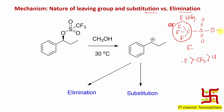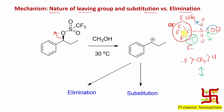Trifluoromethane sulfuric acid is stronger than sulfuric acid — it is a super acid. This leaving group leaves and results in a carbocation. A group is considered a good leaving group if the negative charge on it is well stabilized. The negative charge here has multiple stabilization options: two equivalent canonical forms with S=O double bonds, and the very strong –I effect of the CF3 group, which stabilizes the negative charge very well.